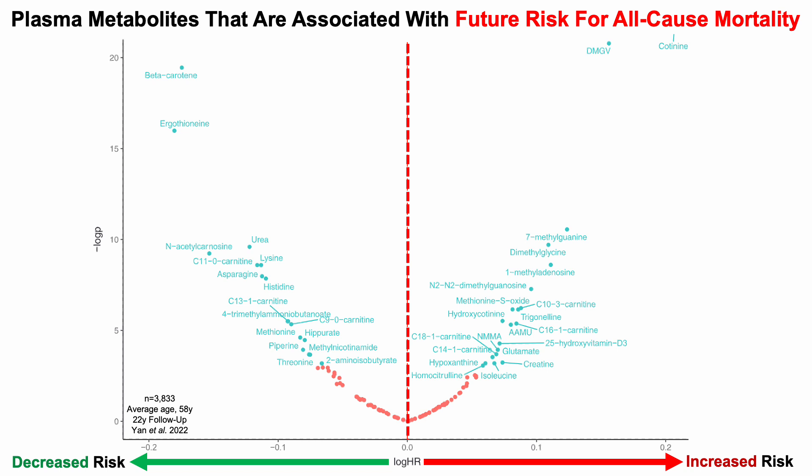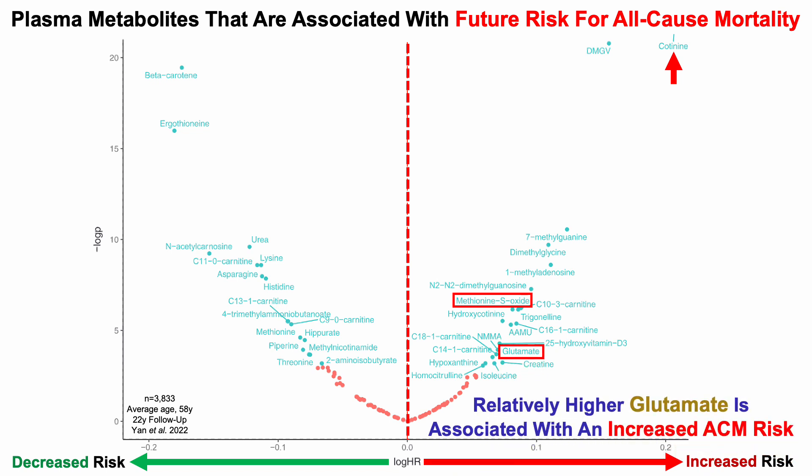Let's go through a few examples. To the far right, the metabolite associated with the highest risk for all-cause mortality is cotinine, which is a marker of tobacco use and is elevated in smokers. Also in the higher risk group is methionine sulfoxide, which I covered in an earlier video as a marker of oxidative stress. And last but not least, just as a few examples, is the amino acid glutamate — relatively higher levels of glutamate are associated with an increased all-cause mortality risk.